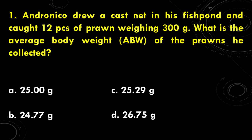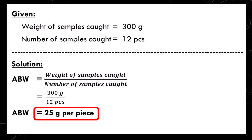How did we get the correct answer? First, we determine the given information from the problem. The available information are the weight of the samples caught, which is 300 grams, and the number of samples caught, which is 12 pieces. The formula for ABW is the weight of samples caught divided by the number of samples caught. That is 300 grams divided by 12 pieces, so our ABW is 25 grams.